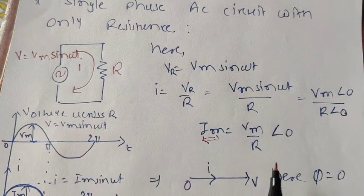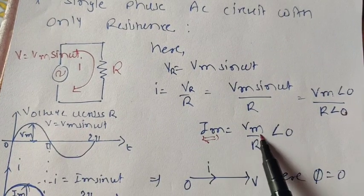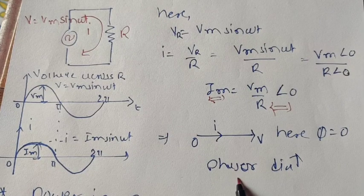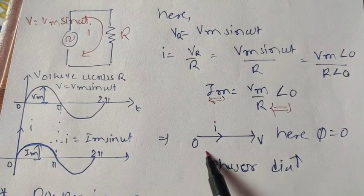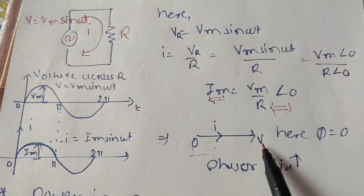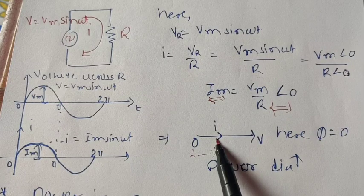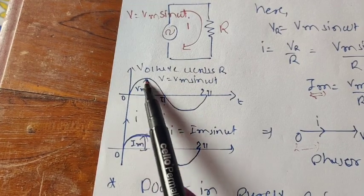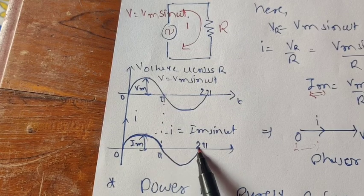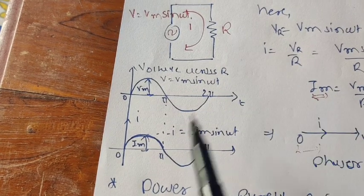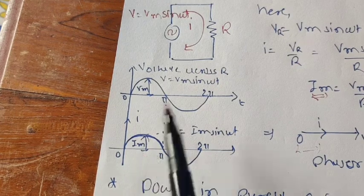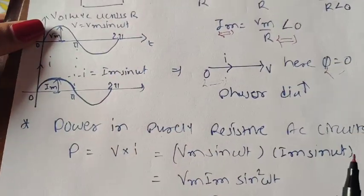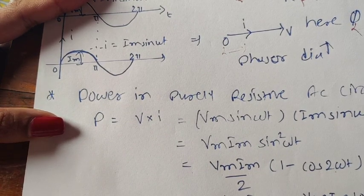For a purely resistive single-phase AC circuit, the phasor diagram shows voltage and current both in phase, so φ = 0. In the waveform, the supply voltage and the current measured across resistance R both have the same phase — Vm is the peak voltage and Im is the peak current.